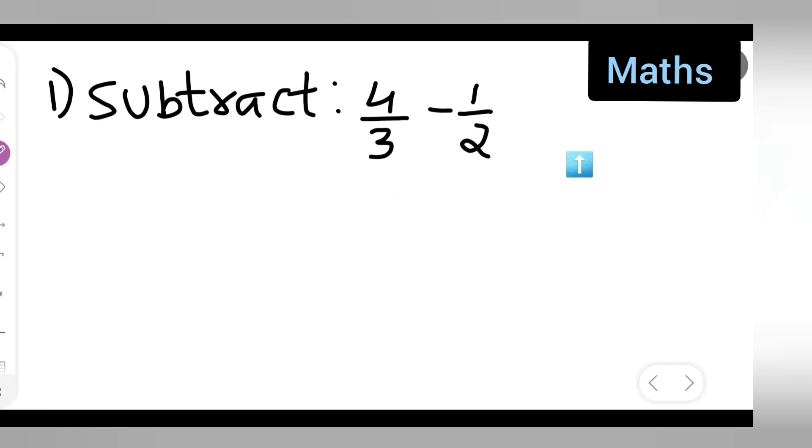So in this case, what I'll have to do is write down 4 upon 3 multiplied with the denominator of the other, minus 1 upon 2 multiplied with the denominator of the other. Let me explain this part - both numerator and denominator, it's like cross multiply.